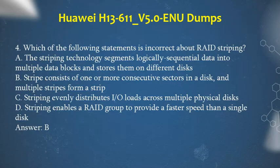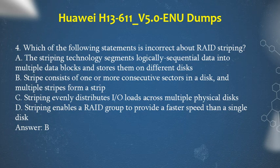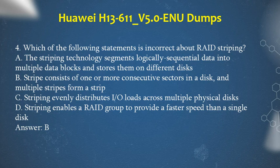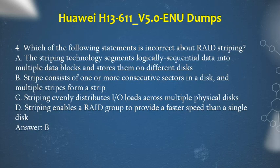Question 4: Which of the following statements is incorrect about RAID striping? a. The striping technology segments logically sequential data into multiple data blocks and stores them on different disks. b. Stripe consists of one or more consecutive sectors in a disk, and multiple stripes form a strip. c. Striping evenly distributes I/O loads across multiple physical disks. d. Striping enables a RAID group to provide a faster speed than a single disk. Answer: b.